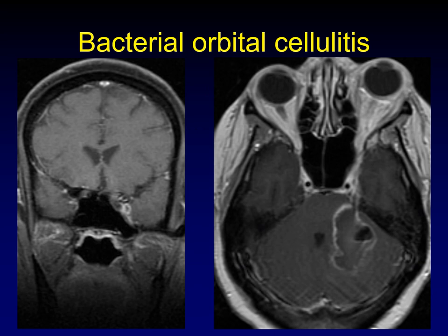Here is a bacterial cellulitis that originated in the orbit and traveled back along V2 into Meckel's cave, then back along the trunk of the fifth cranial nerve to expand into the brain stem and eventually the posterior fossa. This is a huge bacterial abscess in the brain, but it all came from spread from the orbit. In cross section, this looks like spread along a nerve — it really is spread of infection, not tumor. The abscess gives it away, but perineural spread of tumor will occasionally have a very similar appearance.